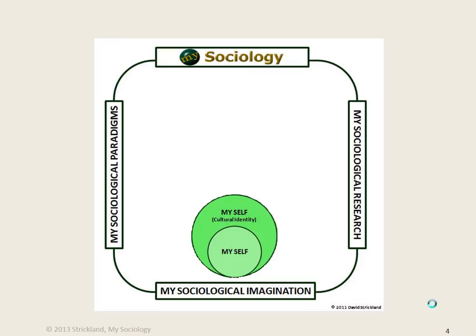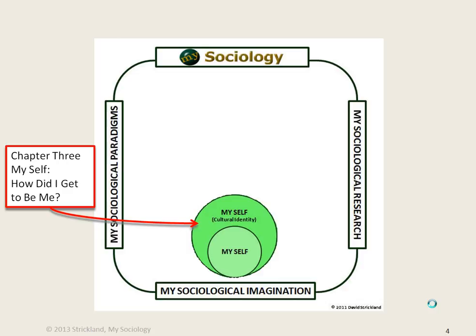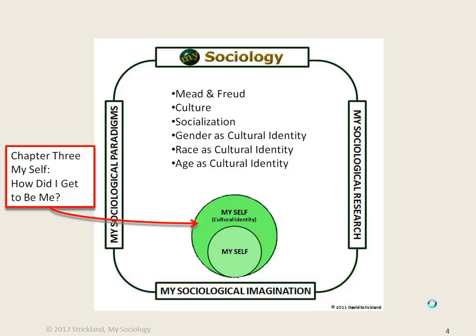We continue with the concept of the self in chapter 3, but we expand it beyond the self-concept and social identity to the impact of culture on the self, including culture and socialization, as well as the concepts of gender, race, and age. Gender, race, and age are discussed in terms of cultural identity. The concept of stratification by gender, race, and age appears in a later chapter.